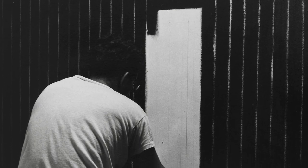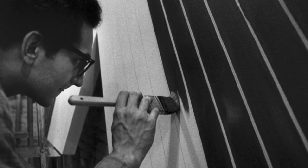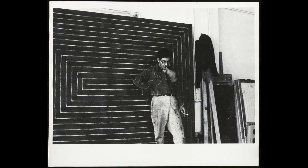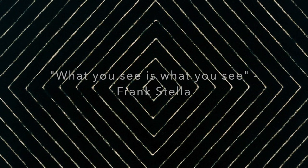Frank Stella made these paintings known as the Black Paintings. Stella used commercial paint that he bought for one dollar a gallon and just simple paint brushes. He painted stripes on a canvas and that was it. When Stella presented these paintings made with a few bucks worth of paint and said, here they are, what you see is what you get, it was really revelatory.